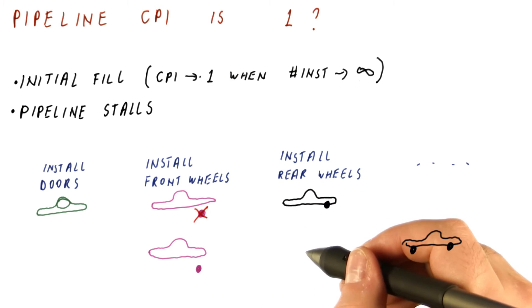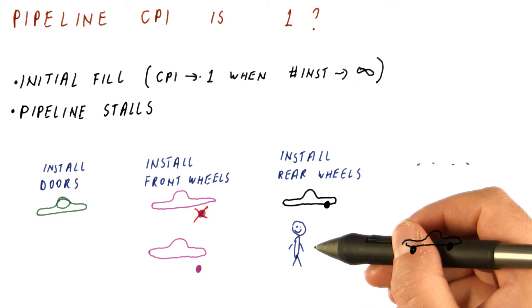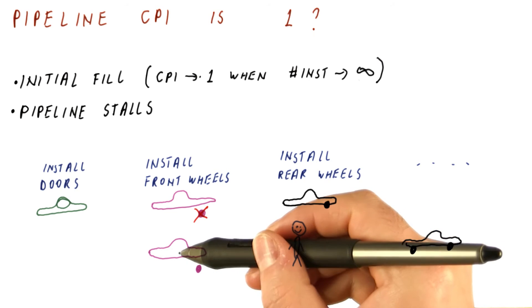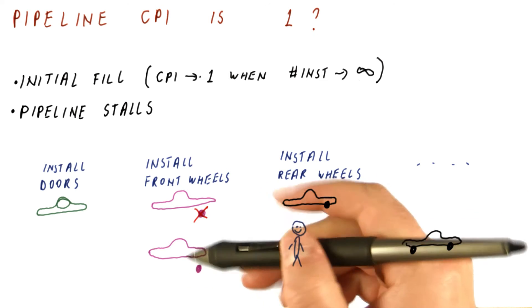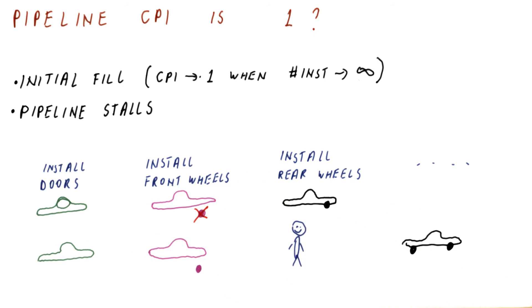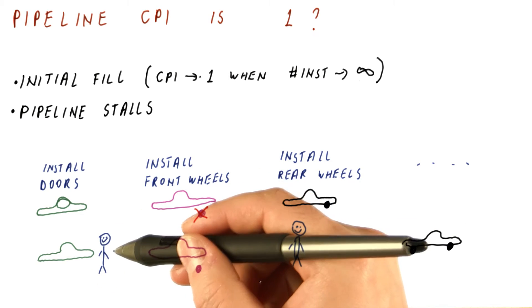Because the purple car didn't move on, the worker over here is idle, because there is no car to install the rear wheels in this cycle. And because the purple car didn't move on, the green car, whose doors have been installed, cannot move on. So we have an idle stage here too.